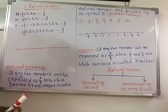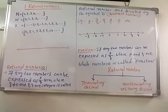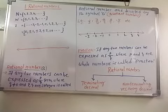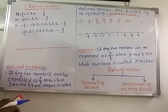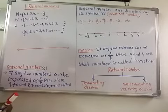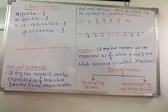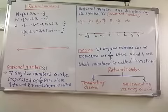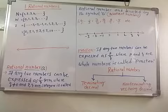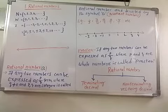Hi students, welcome to mathematics class. Today we are going to discuss the chapter on rational numbers. In our previous classes we learned about the number line and the representation of types of numbers such as natural numbers, integers, and rational numbers on the number line. In this chapter we will study rational numbers as terminating or non-terminating recurring decimals.